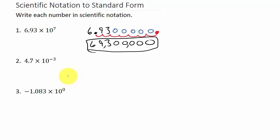Alright, so once again, just write the number down, 4.7. Okay. Now, the exponent here is negative 3. So, that means the decimal moves to the left three places.